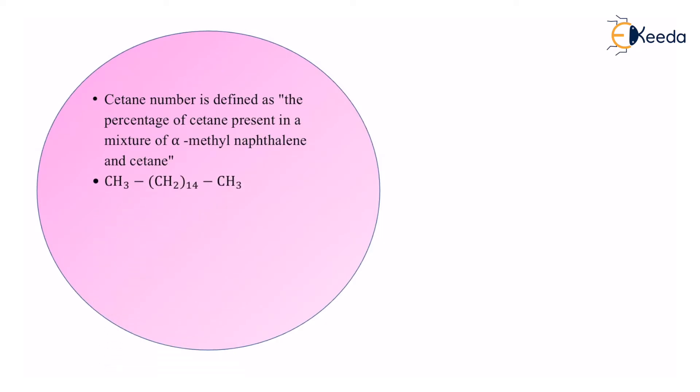Let us first see what cetane is. In the middle, you can see CH2 14 times and on both sides you have CH3 and CH3. So if we count the number of carbons, overall we have 16 carbons and 34 hydrogens making it cetane.